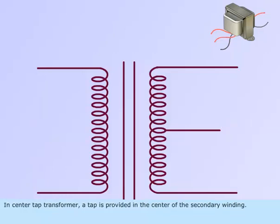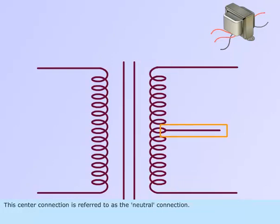In Center Tap Transformer, a tap is provided in the center of the secondary winding. This center connection is referred to as the Neutral Connection.